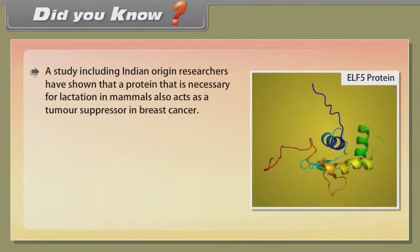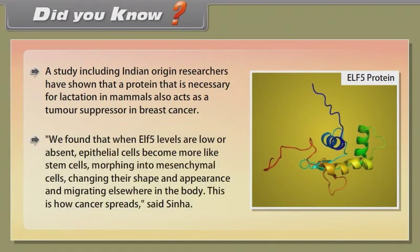Did you know? A study including Indian-origin researchers has shown that a protein necessary for lactation in mammals also acts as a tumor suppressor in breast cancer. When ELF5 levels are low or absent, epithelial cells become more like stem cells, morphing into mesenchymal cells, changing their shape and appearance, and migrating elsewhere in the body. This is how cancer spreads, said Sinha.